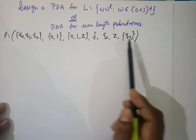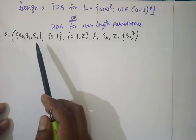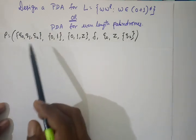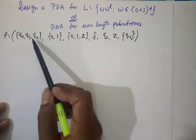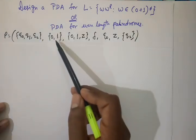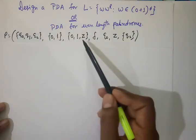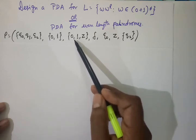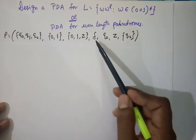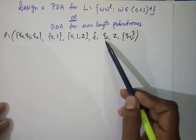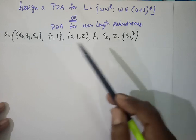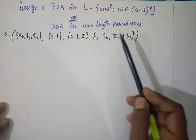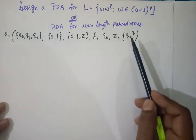These are the components of our PDA. There are three states: Q0, Q1, and Q2. The input alphabet is {0, 1}. The stack symbols are 0, 1, and Z. Delta is our transition function. Q0 is our initial state, Z is the bottom stack marker, and Q2 is our final state.